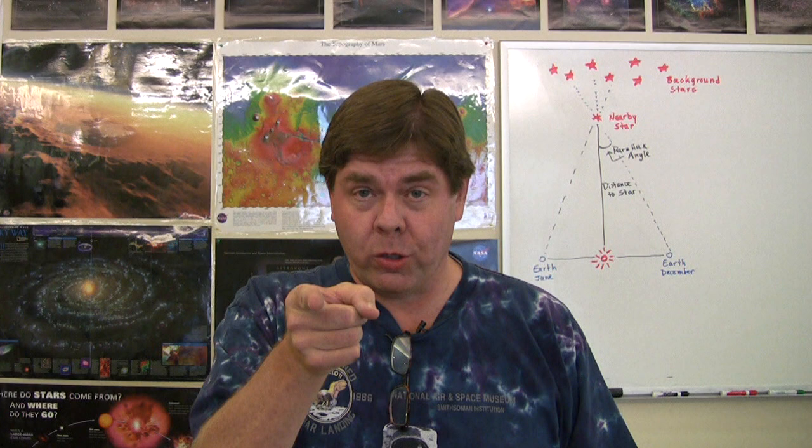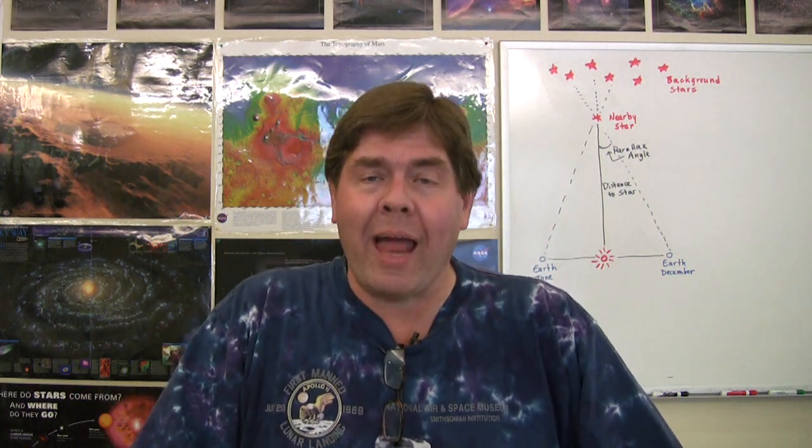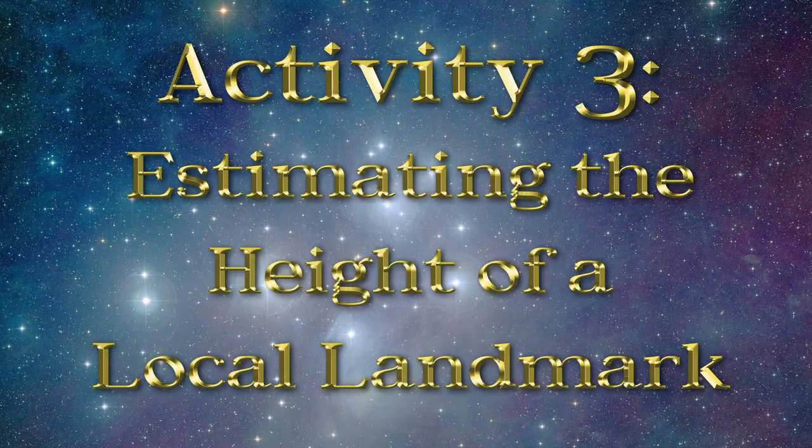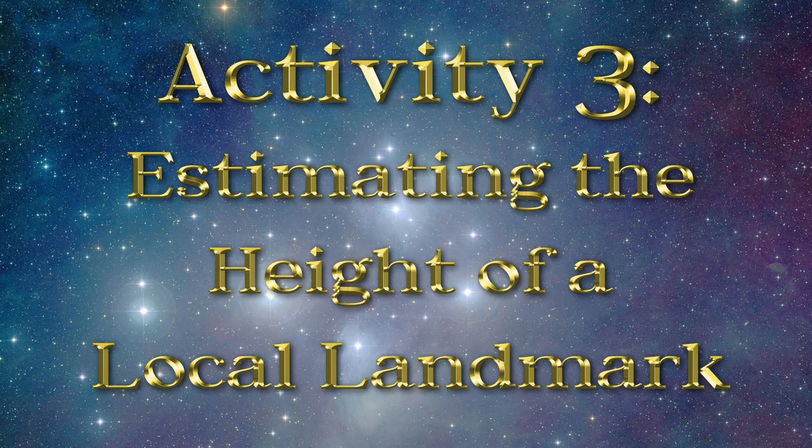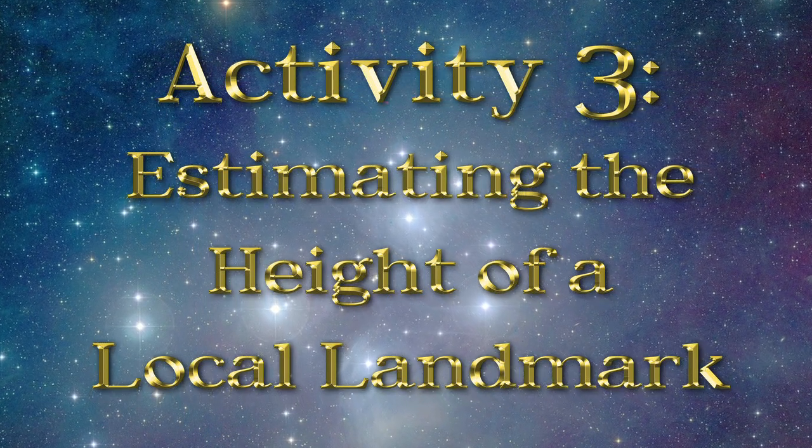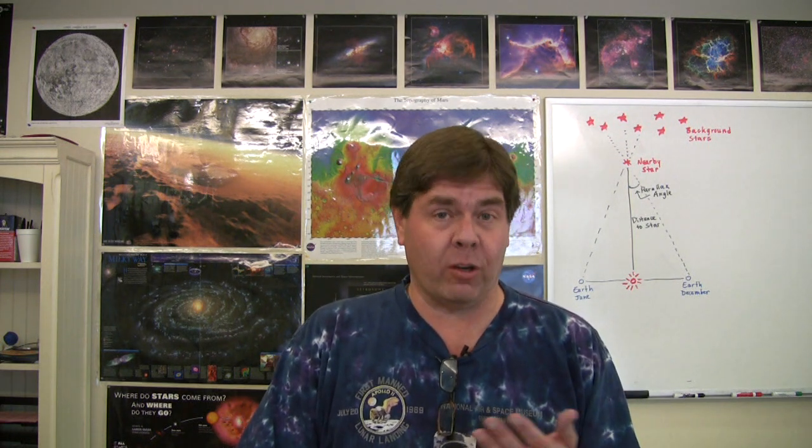All right, now it's your turn. With your teacher, pick a local landmark and see if you can calculate its height. Getting an accurate angle with our simple quadrant isn't very easy, and you have to be careful to make sure you're getting the correct angle. You should estimate the angle visually and then make sure that your actual angle is reasonable. Now that you've gotten the idea, let's try out the same technique on our main activity: trying to find the distances to simulated stars.